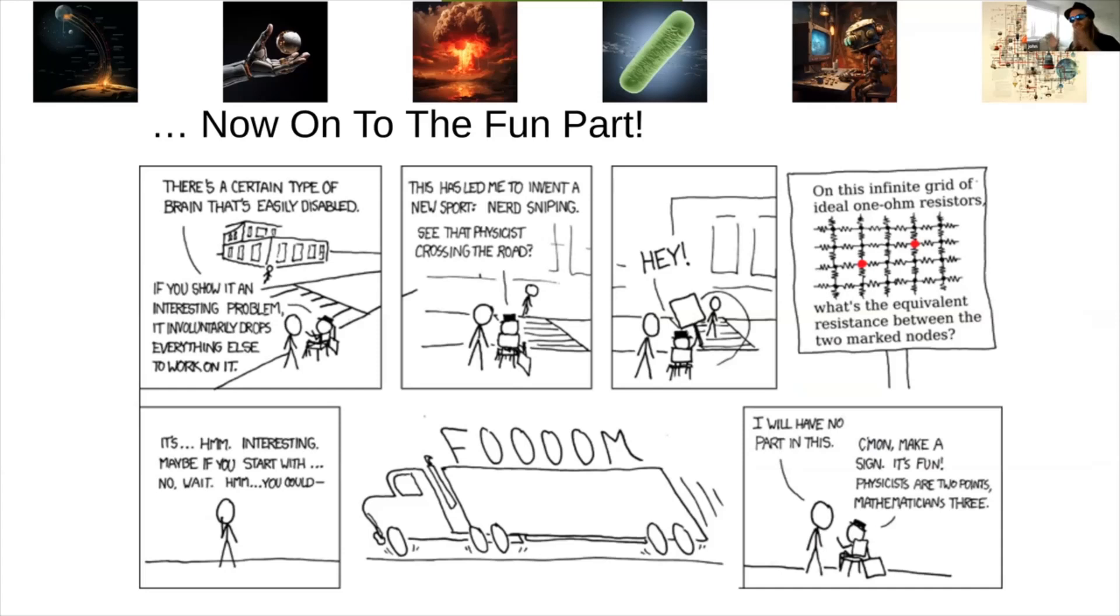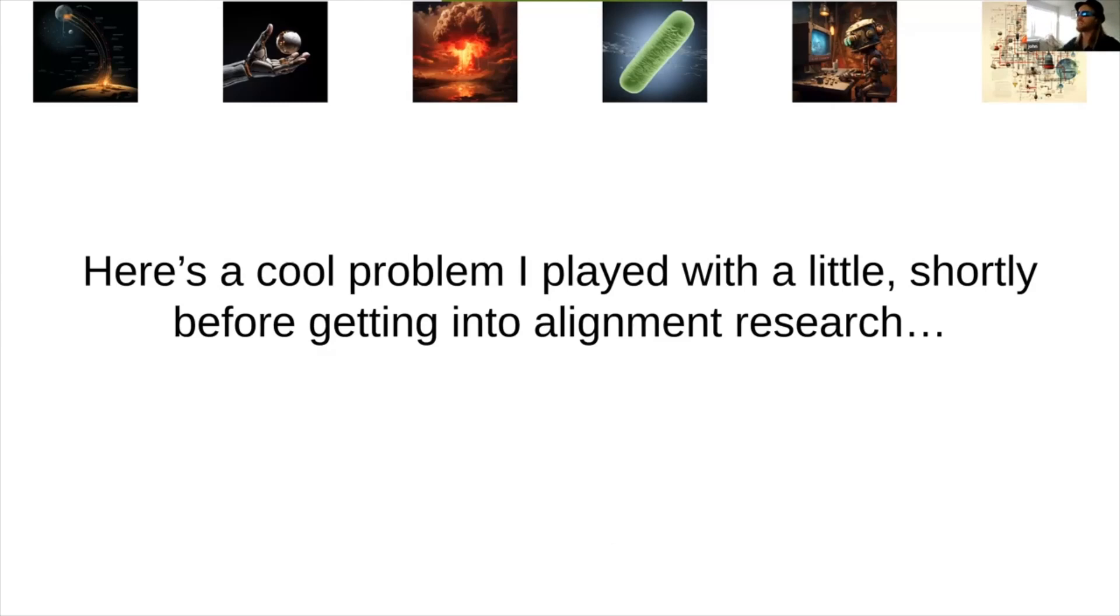So, that's three different frames on what sort of value research might be able to add here. One of them is just generally becoming less confused. One of them is being able to detect things that aren't obvious just by looking at the system. A third one is being able to detect potentially dangerous stuff for policy purposes. But now on to the interesting part. As promised, the main goal of this talk is to nerd snipe you on some cool problems. The motivation isn't really the central part. We're going into interesting problems that are intended to provide this sort of value. But mostly I'm hoping you find the problems interesting. Firstly, here's a cool problem that I played with a little shortly before getting into alignment research, which I expect people in A-Life will love.